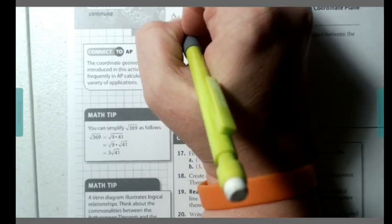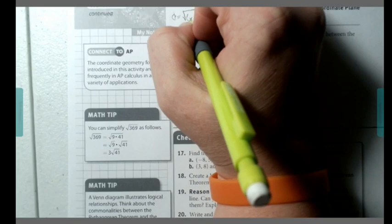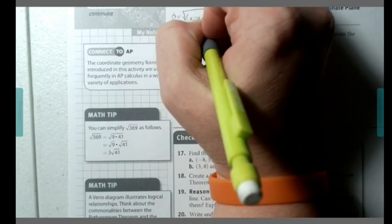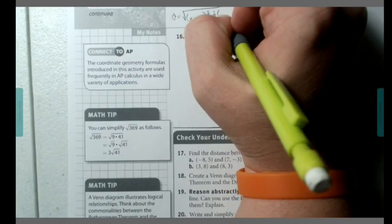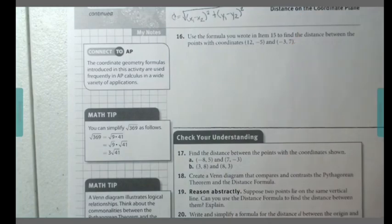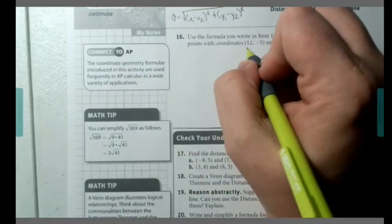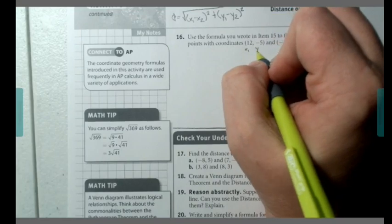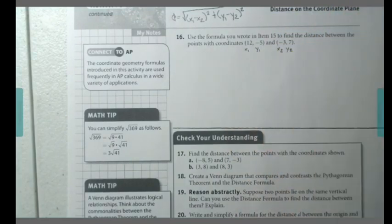That was D equals the square root of x sub 1 minus x sub 2 squared plus y sub 1 minus y sub 2 squared. We are going to treat one of these as x1, y1 and x2, y2. Remember to plug them in appropriately into this formula.